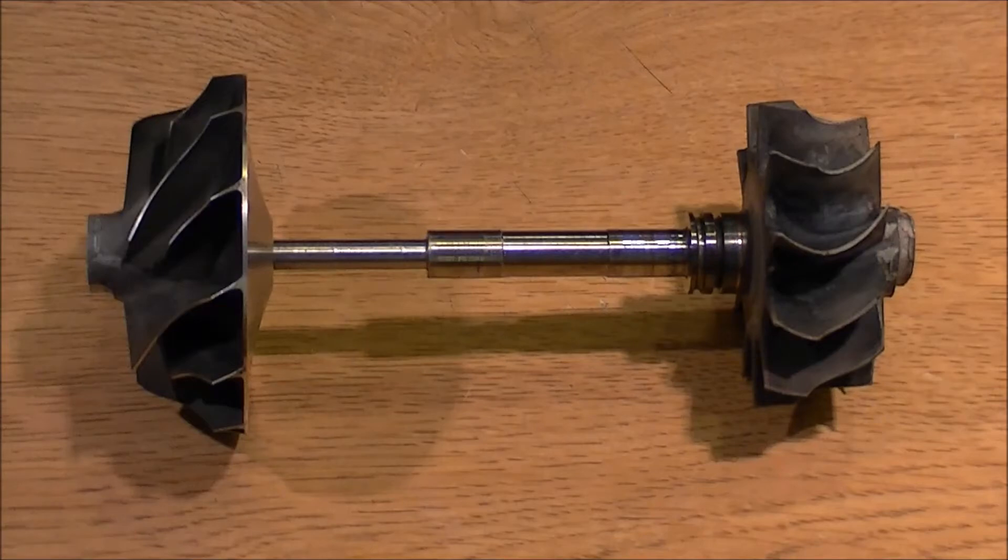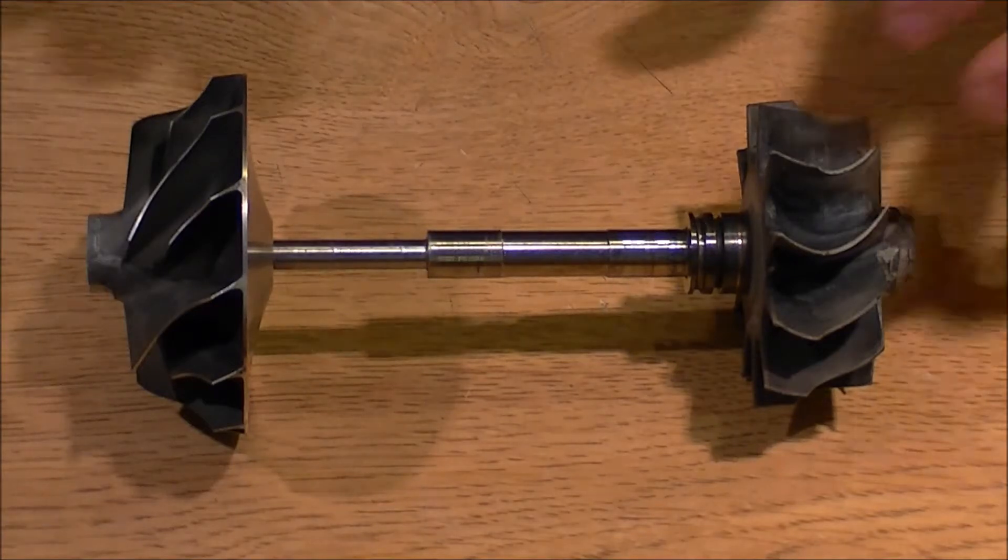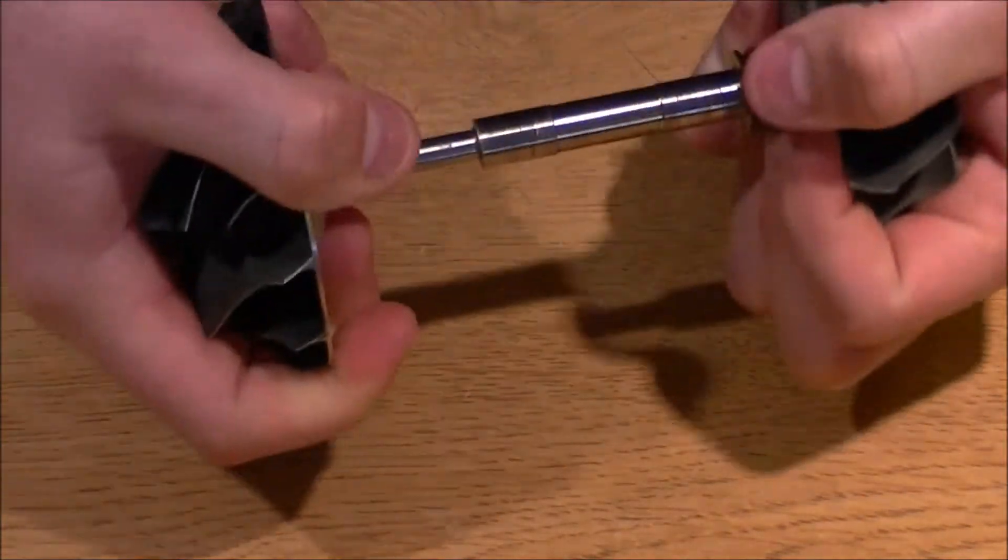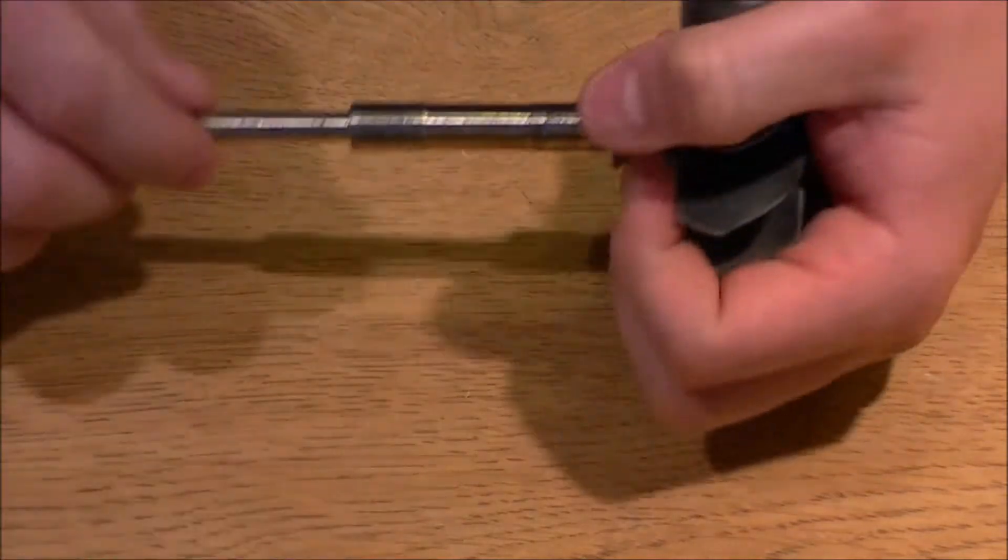So the shaft and turbine wheel assembly, which is this part, I'm going to go ahead and take off the compressor. Okay, here's the compressor. We're going to talk about that next.